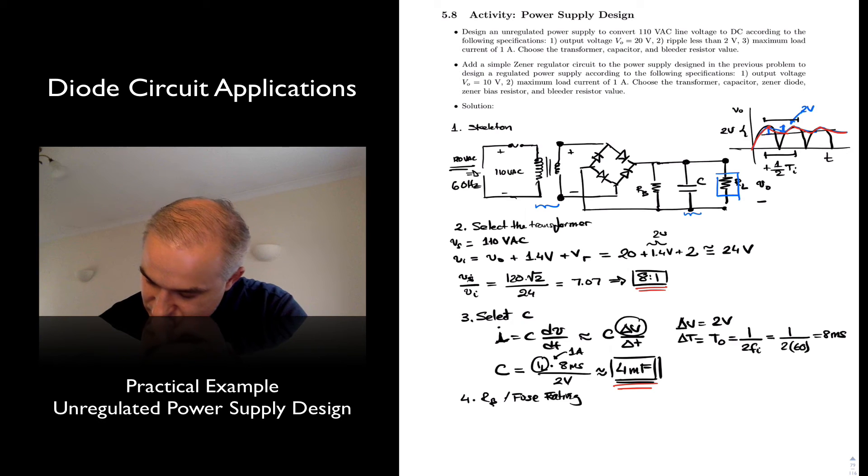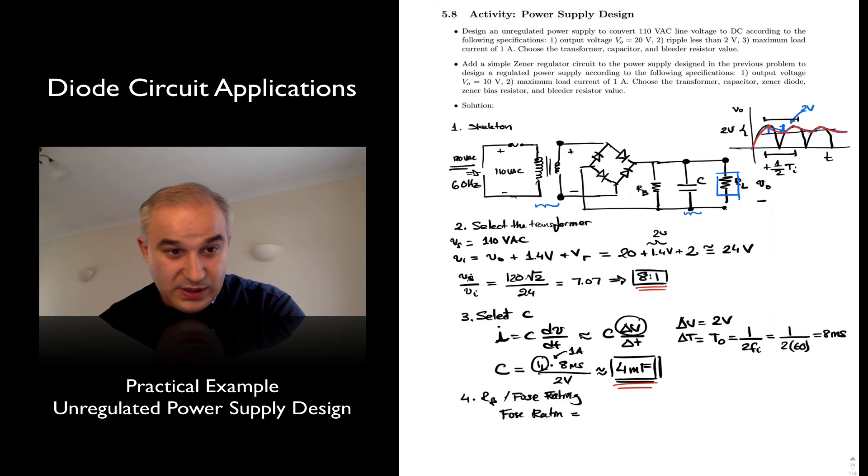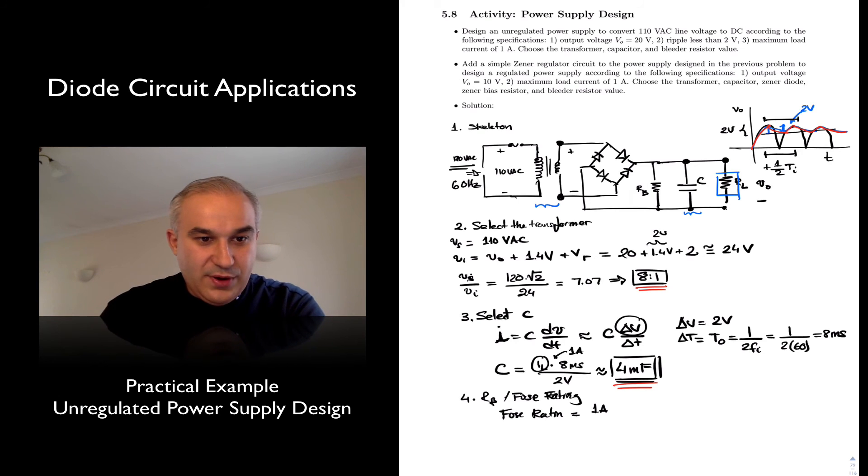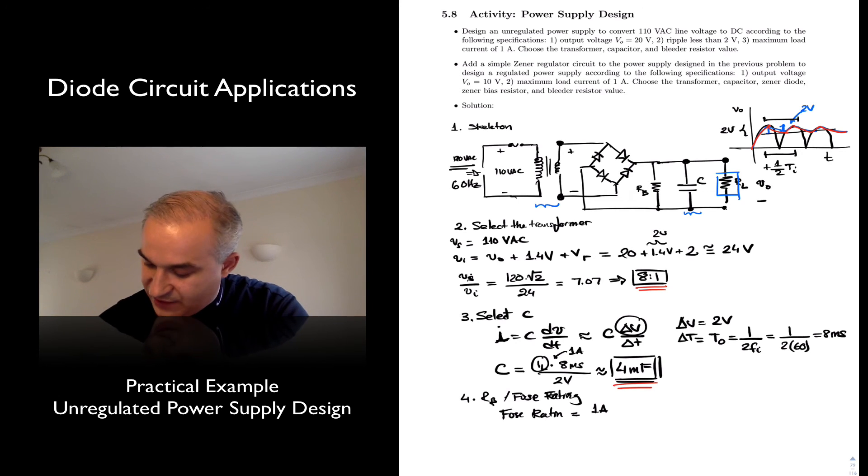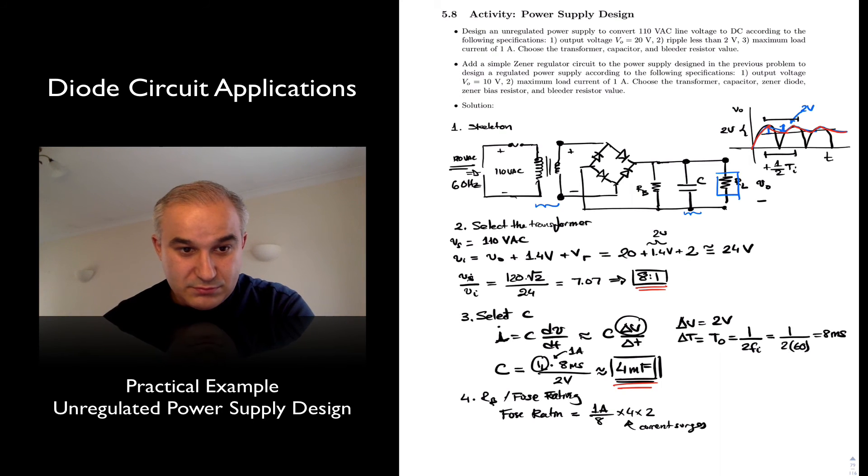So the fuse rating, you will want to be approximately what? 1 amp, over the current in the primary. So we'll have 1 over 8 times 4 times 2, if you want some current charges. This is, you don't want to blow up when it is full loaded.